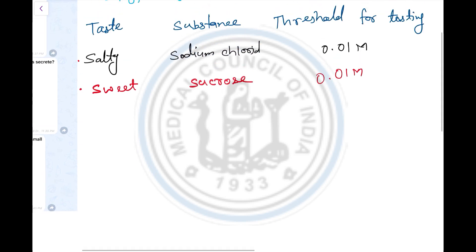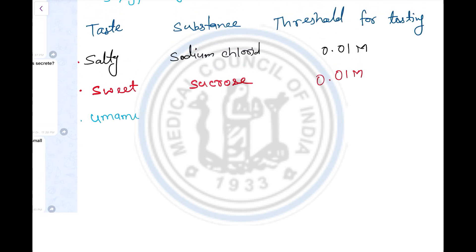The third taste is umami. The substance is glutamate, and the threshold for tasting is 0.000 molar.